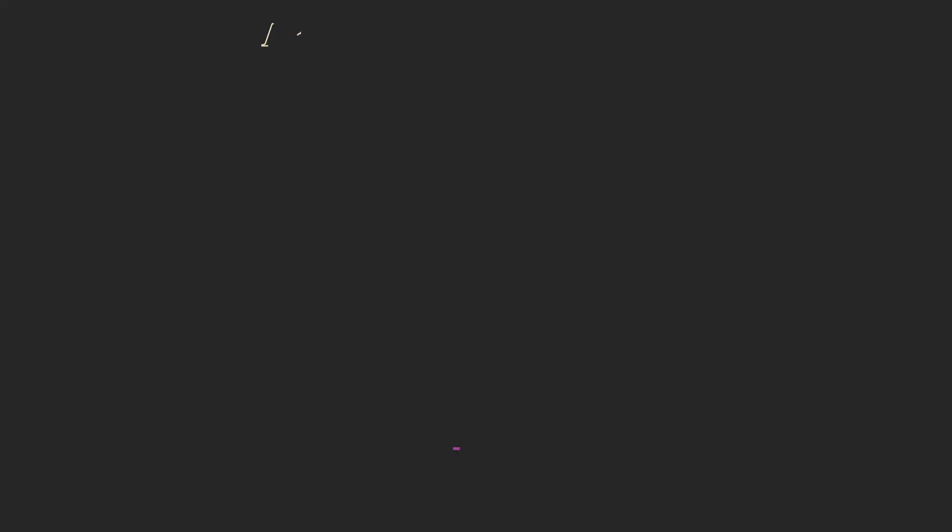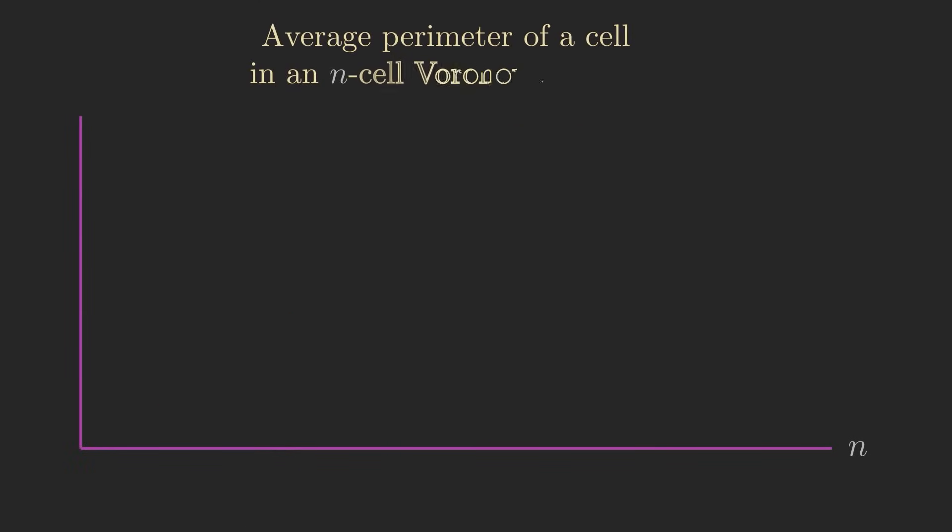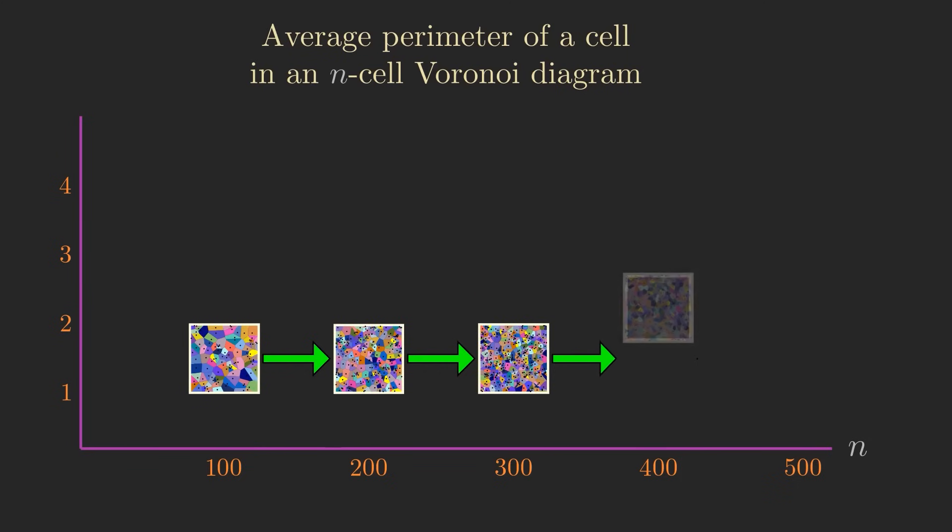Alright let's make a graph. On the horizontal axis, we have n going from 1 up to 500. Now for each of those values of n, we'll let the computer create hundreds of different Voronoi diagrams with n sites, and find the average perimeter of a cell.